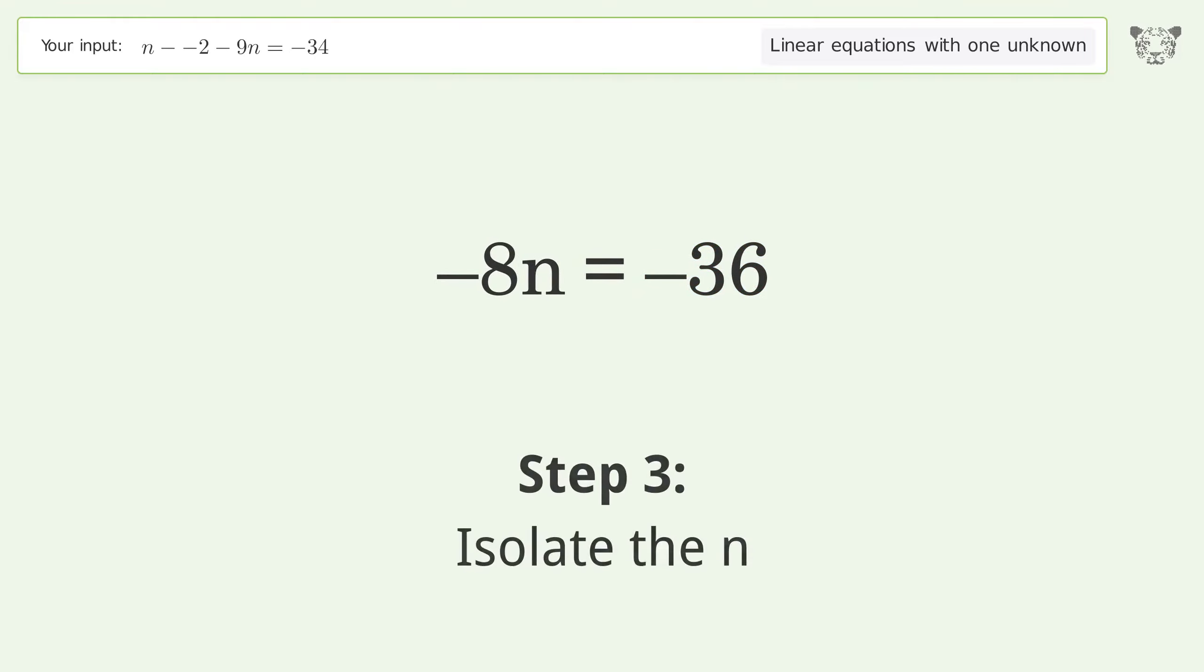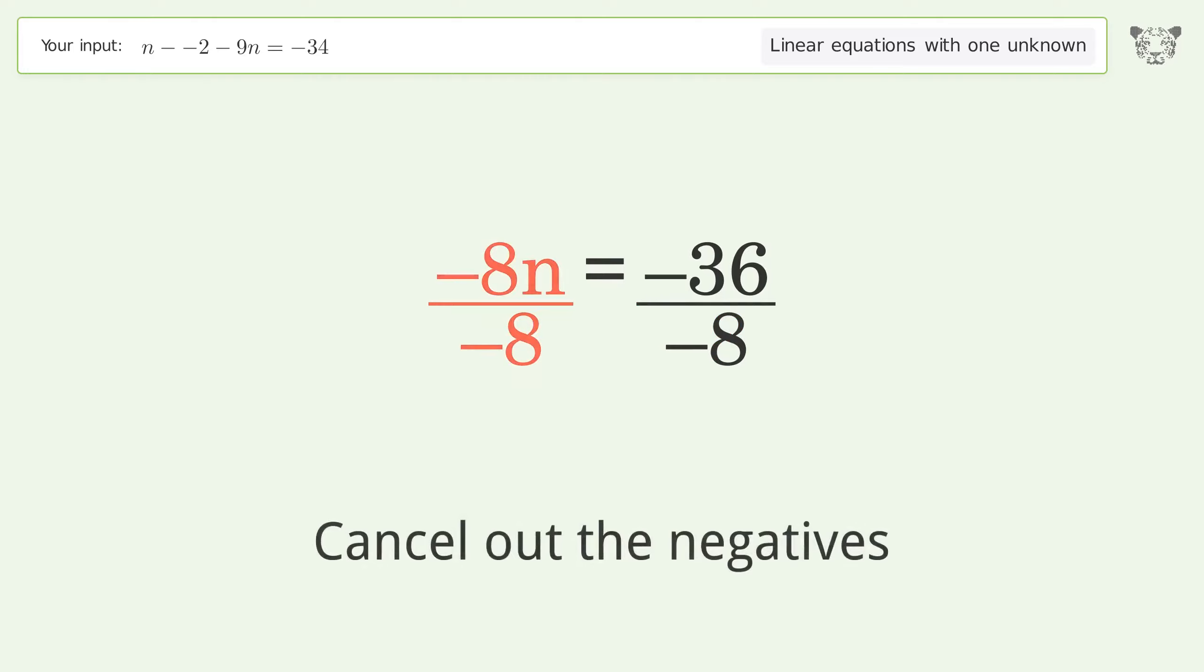Isolate the n. Divide both sides by negative 8. Cancel out the negatives.